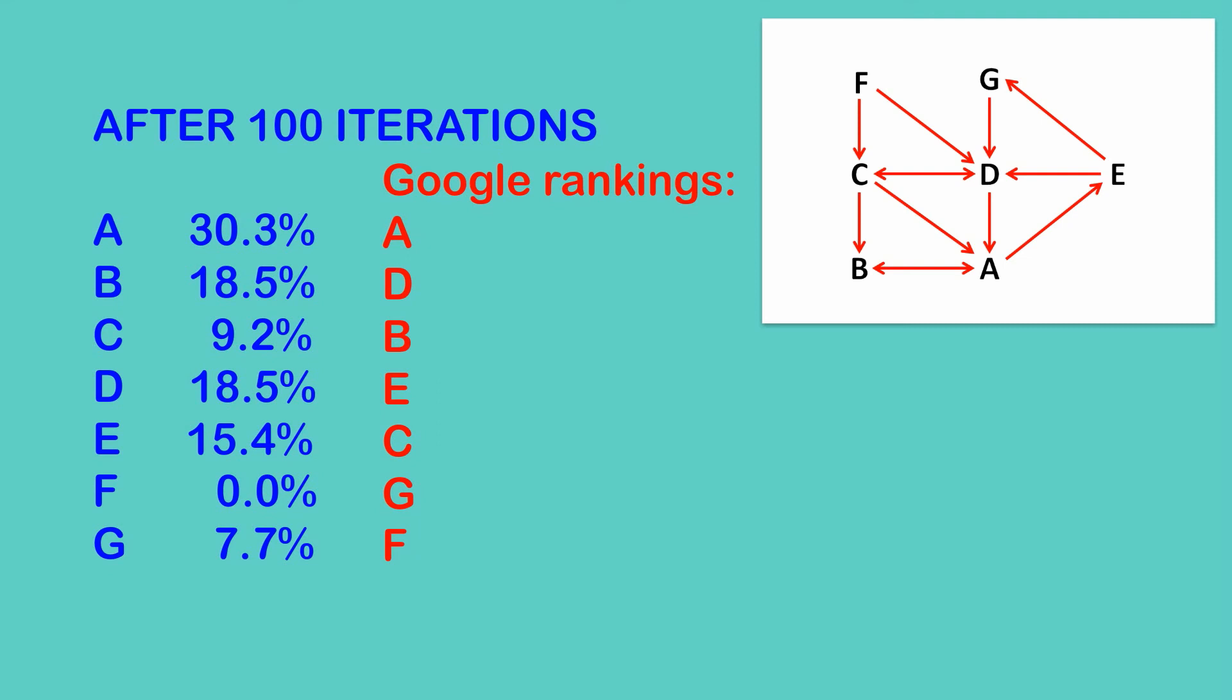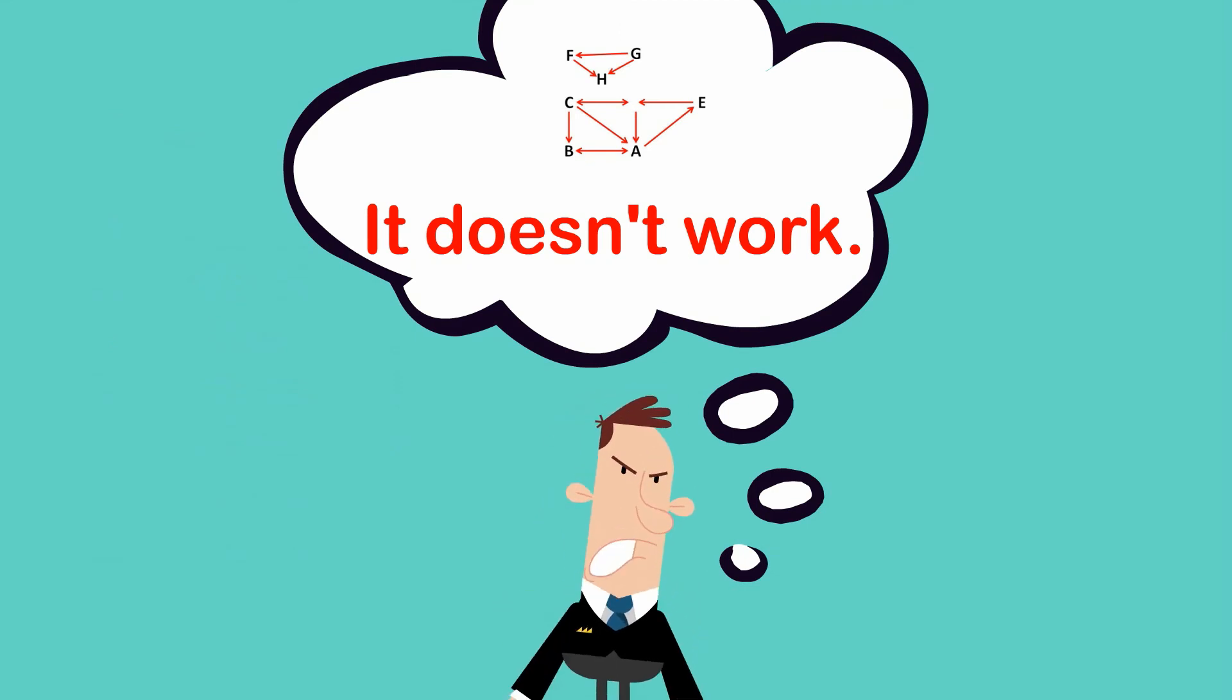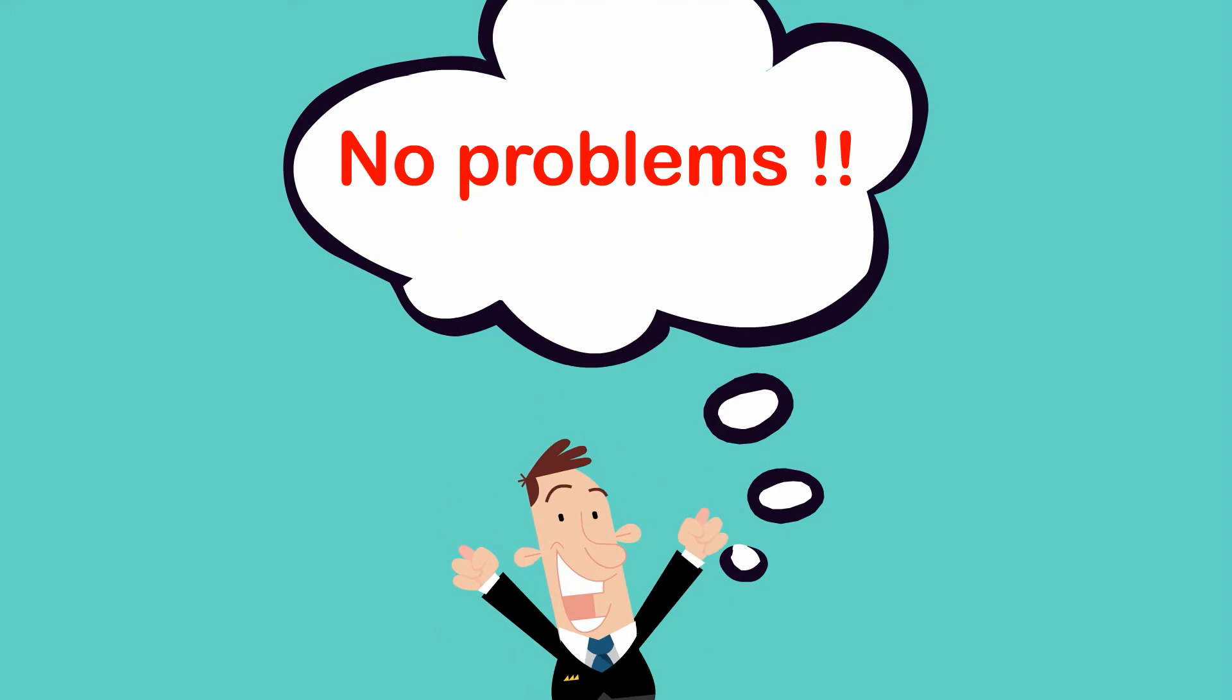Let me close with two comments about the problems Google faces using what I've shown so far. Sometimes you can get different results if you assume different starting rankings, or sometimes website rankings won't approach a limit. So Google uses some modifications to what I've shown to fix these sorts of problems.